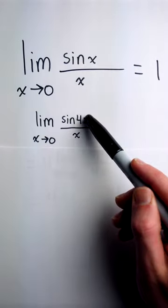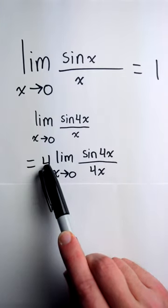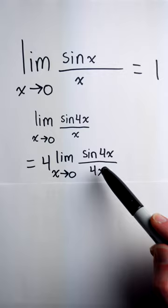We want this to look like sine of a thing divided by that thing. And we can do that by putting a 4 in the denominator. Then we need to put a 4 out front to compensate. Now we have sine of a thing over a thing.